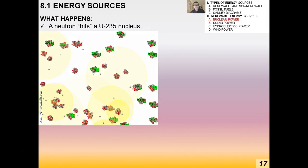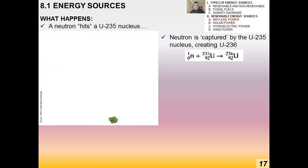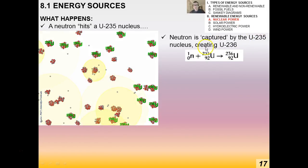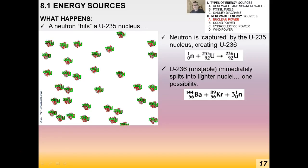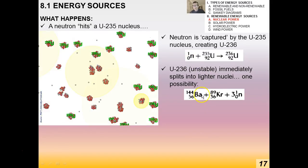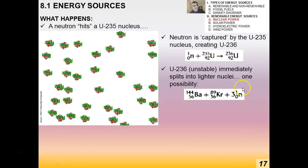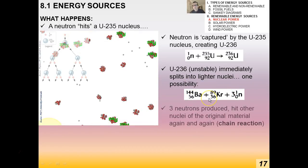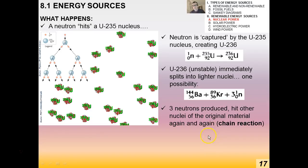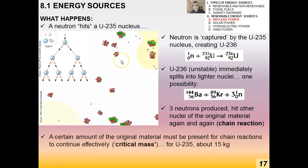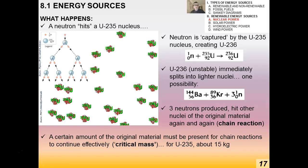When a neutron hits a uranium nucleus, it gets captured and briefly creates the uranium-236 nucleus. That's very unstable, so it immediately splits into lighter nuclei — for example, barium and krypton — along with more neutrons. In this case, three neutrons are produced, which hit other uranium-235 nuclei again and again. That's called a chain reaction.